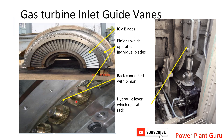These pinions are small gears, individually arranged for one blade each. Every blade has one small pinion, and all these pinions are connected to a rack. This rack, which we can see in the background, is what drives the whole mechanism. The rack moves in both directions to make the vanes close and open.